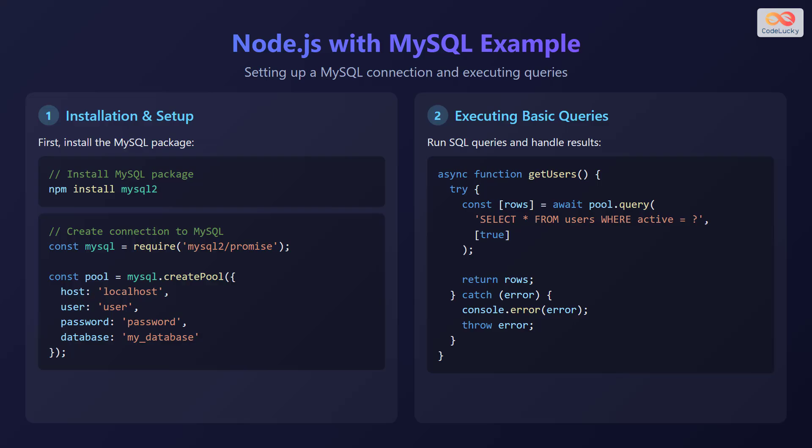Step 2: Executing basic queries — we can run SQL queries and handle results. We declare an asynchronous function getUsers. Inside a try block, declare a constant rows and assign it to await pool.query with SELECT * FROM users WHERE active equals question mark, passing an array with the value true. Finally, return rows. Inside the catch block, get the error and throw the error.